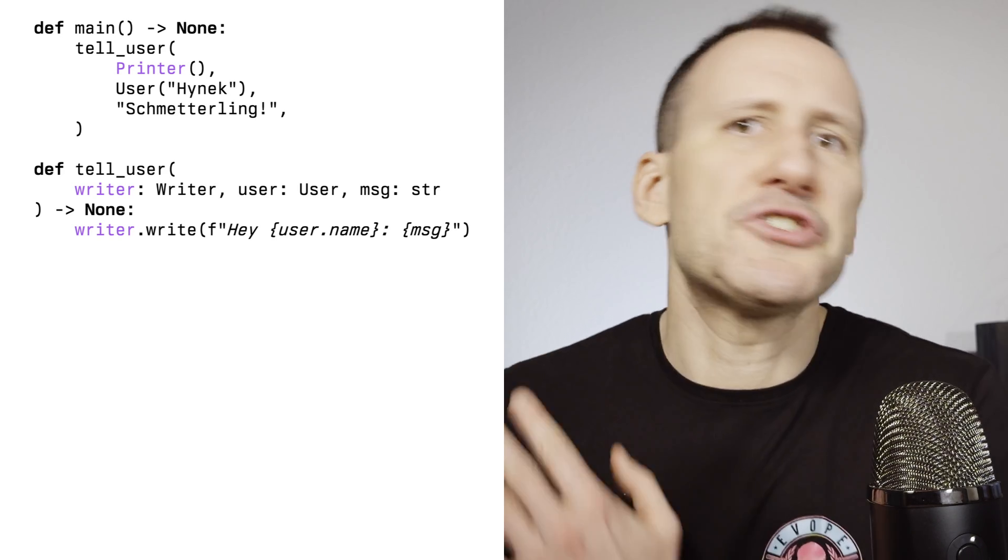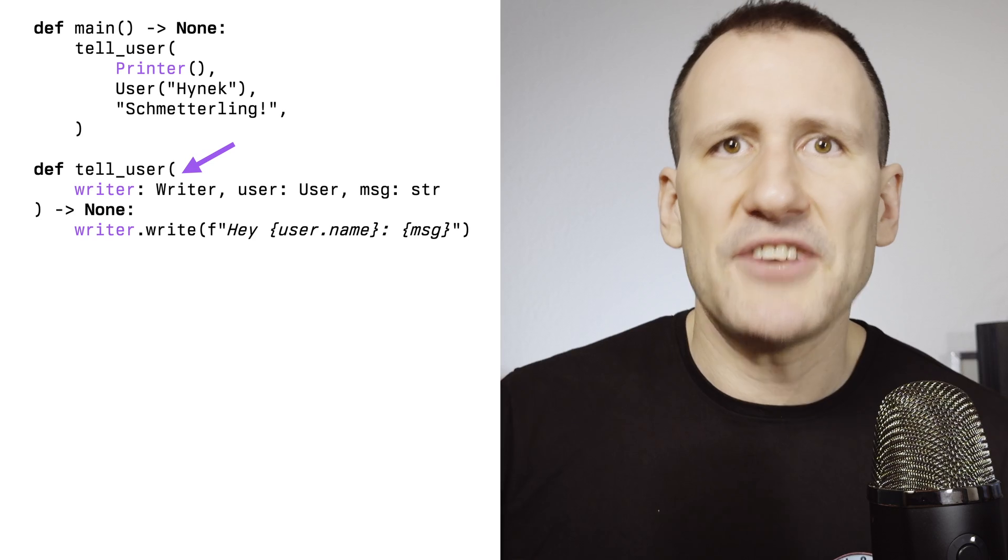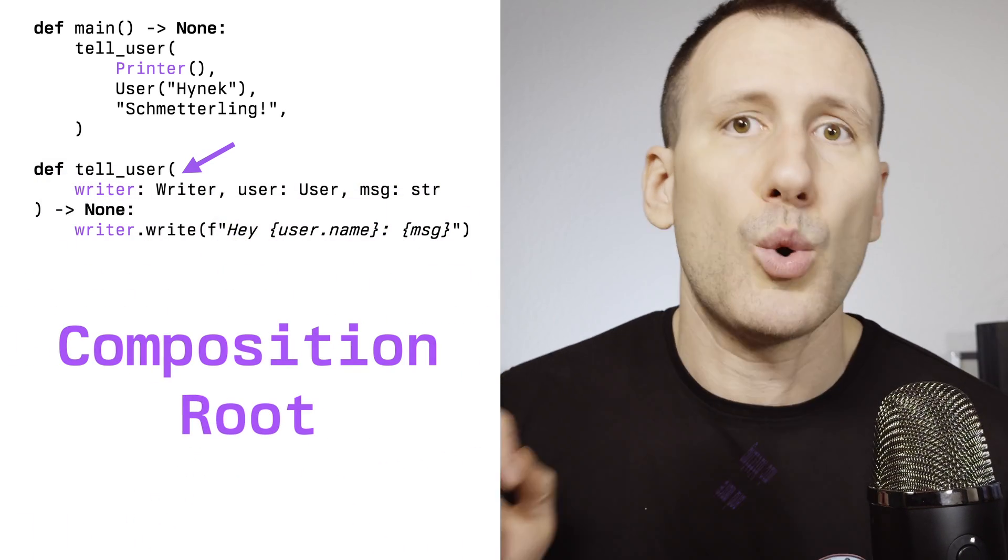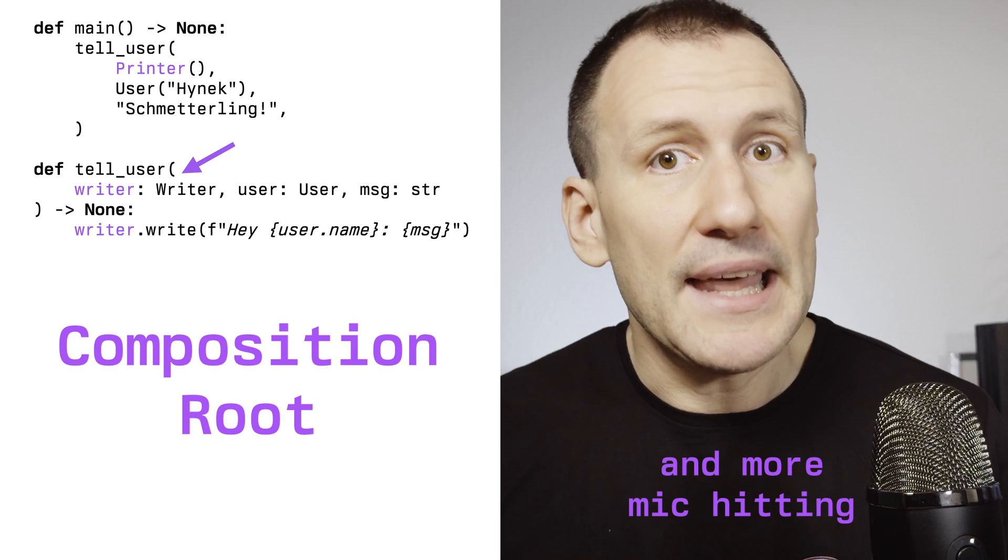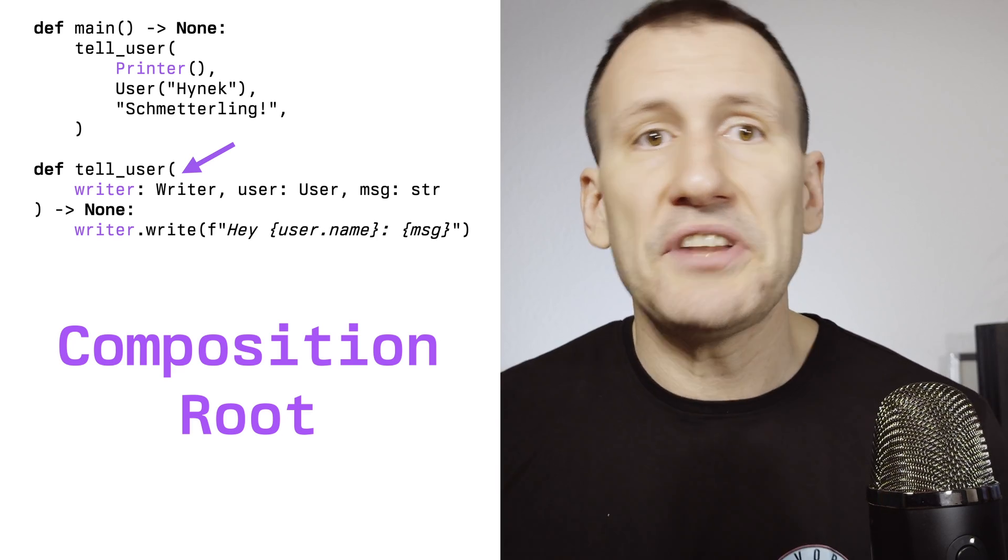Now, if you want to inject dependencies, these to be injected objects have to come from somewhere. They don't fall from the sky, even if you are running in a cloud. Dependency injection is always relative. So if we come back to the example from before, the main function instantiates a printer instance and passes it into tell user. That makes main a so-called composition route, which is another weird word. There's going to be more weird words today. And that's the place where all requirements for a piece of code are acquired so that they can be injected.